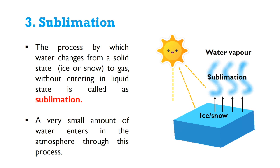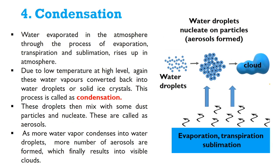Sublimation is the process by which water changes from a solid state — either ice or snow — to gas, without entering the liquid state. A very small amount of water enters the atmosphere through this process. The next important process is condensation.